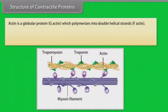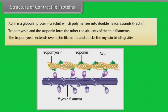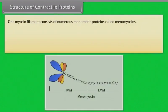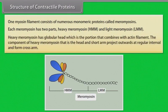Structure of contractile proteins. Actin is a globular protein, G-actin, which polymerizes into double helical strands, F-actin. Tropomyosin and troponin form the other constituents of the thin filaments. Tropomyosin extends over actin filaments and blocks the myosin binding sites. One myosin filament consists of numerous monomeric proteins called meromyosins. Each meromyosin has two parts: heavy meromyosin (HMM) and light meromyosin (LMM). Heavy meromyosin has a globular head that combines with the actin filament. The head and short arm project outwards at regular intervals and form cross-bridges.